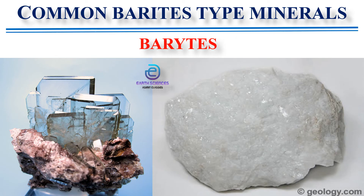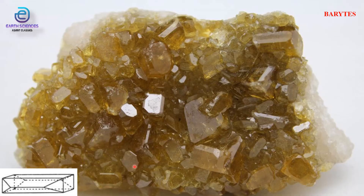Many common minerals crystallize in the barite type class. Examples include barite, celestite, olivine, enstatite, andalusite, topaz, anhydrite, aragonite, sulfur, and staurolite. The mineral barite shows forms including prism (210), side pinacoid (010), basal pinacoid (001), and dome (101) — this particular face cuts the a and c axes and is parallel to the b axis.